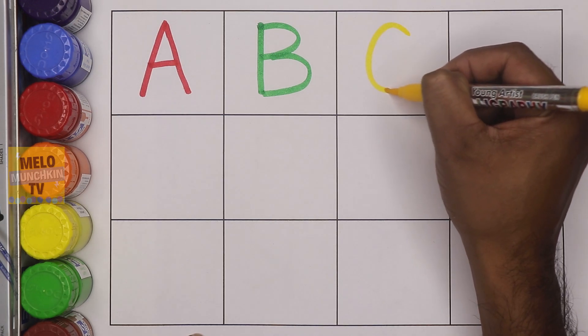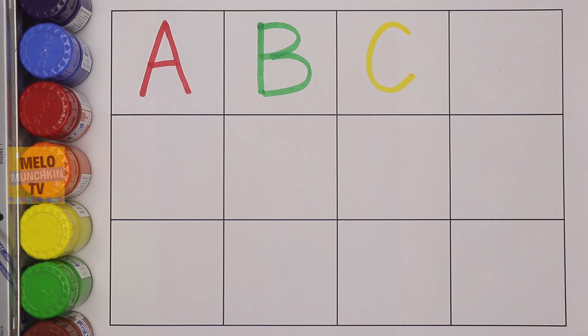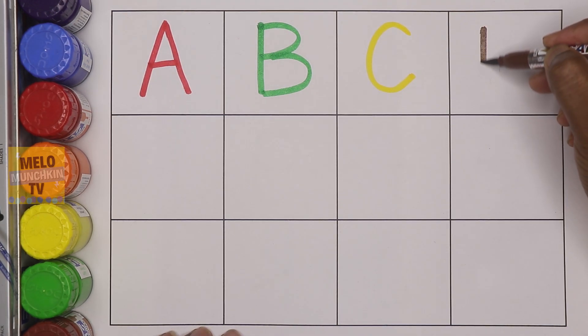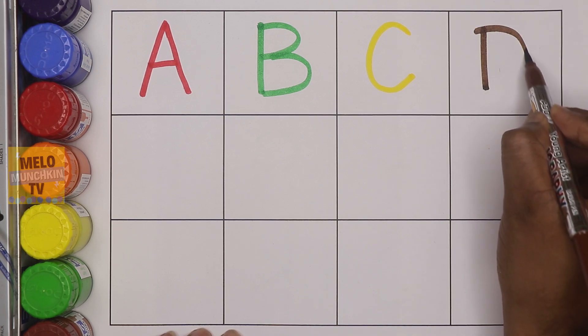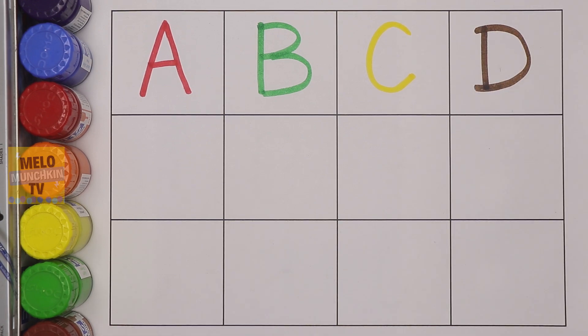After B it's C. C for cat, C for cat. Brown color, D. D for dog, D for dog. Pink color.